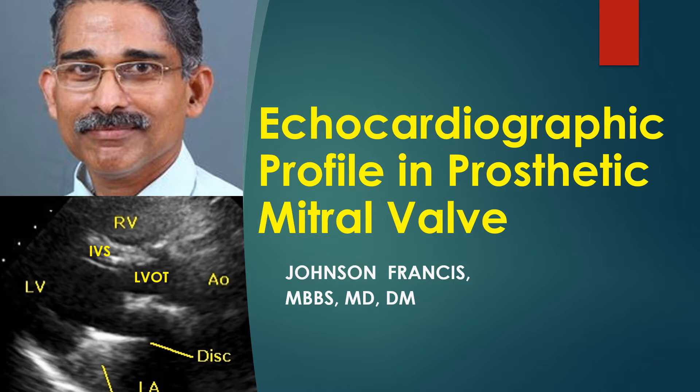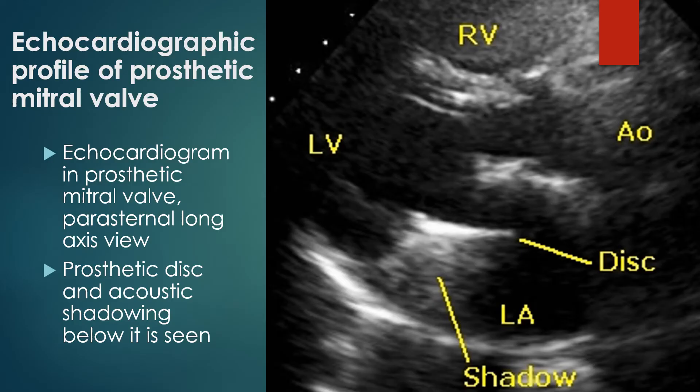Echocardiographic profile in prosthetic mitral valve. We start imaging from the parasternal long axis view, abbreviated as PLAX. In this view we can see the outflow region of the right ventricle and basal part of the left ventricle, with the interventricular septum in between. The left ventricular outflow tract above the mitral valve leads to the aorta, and the left atrium is seen posterior to the aorta.